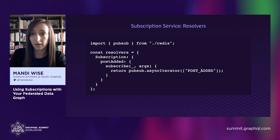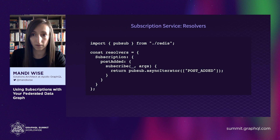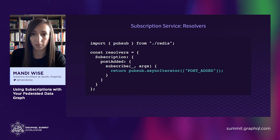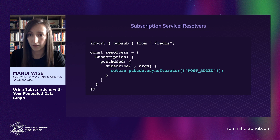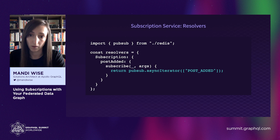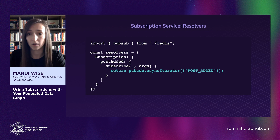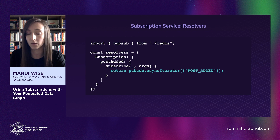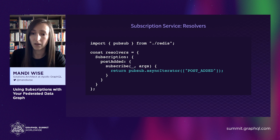Over in the resolvers for our subscription fields, we set up a client to access the shared Redis instance just as we did in the post service, but here we listen for post-added messages instead. If all we ever needed to do was resolve data available in the message payload provided by the post service, that would be the end of the story. But that payload doesn't include the author details we need, or any other data about the new post that may be queried when using that node as an entry point to the graph. So we'll need some way to resolve that additional data whenever it is requested by clients.